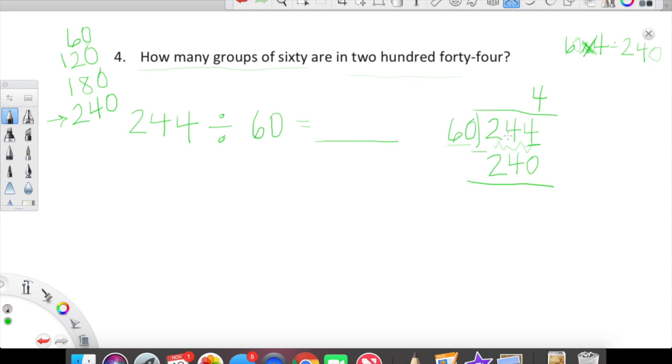So 60 times 4 is 240. Let's look at our difference between 244 and 240, which is going to be 4. So we have 4 remainder 4, which means: how many groups of 60 are in 240? Well, we'll have four groups, and then we're going to have four leftover. Interesting. It's really important to understand the wording of these problems and how it connects to the standard algorithm.